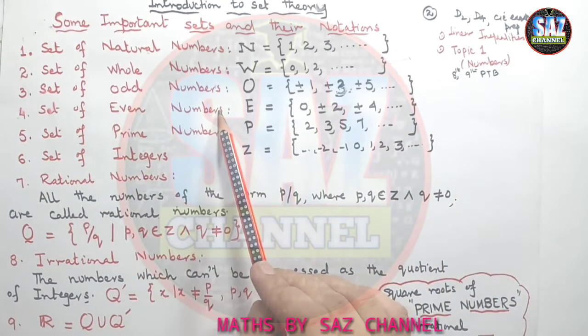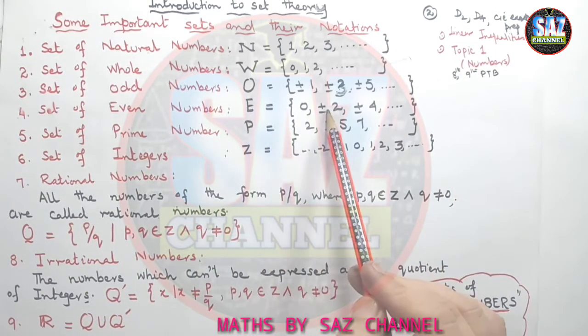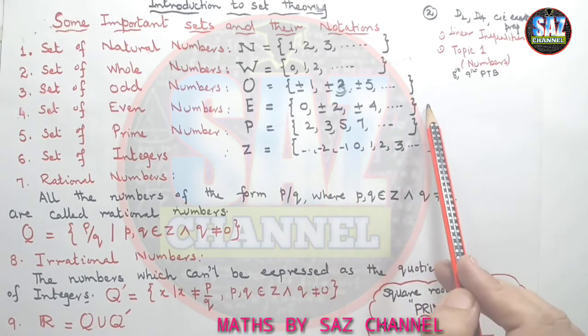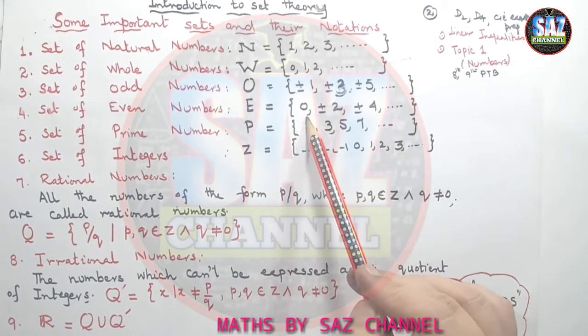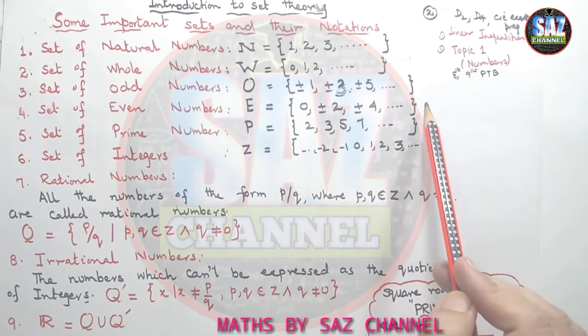Coming to the set of even numbers, even numbers are 0, plus minus 2, plus minus 4 and so on. Even numbers are the numbers which when we divide them by 2, we get the remainder 0.